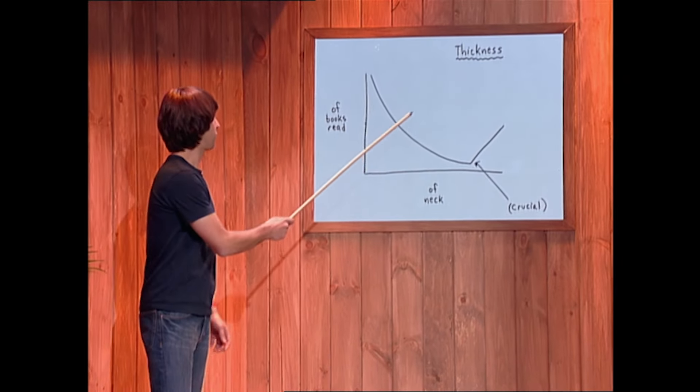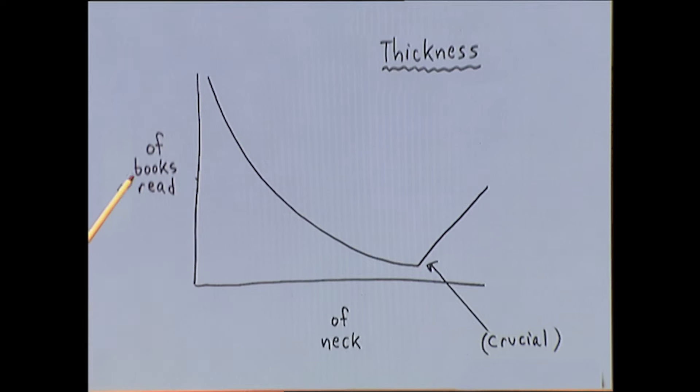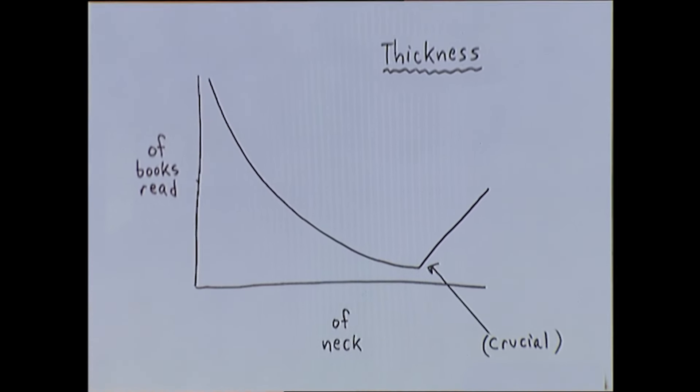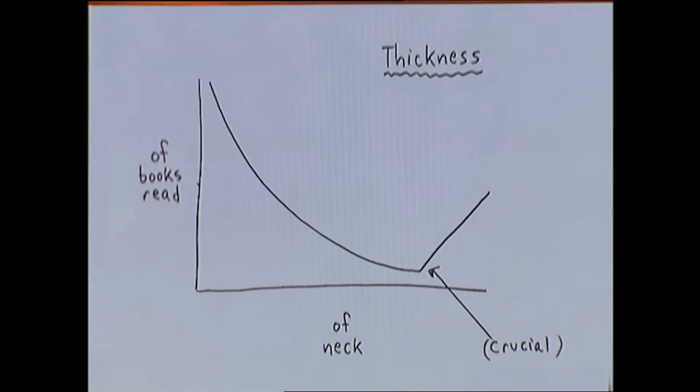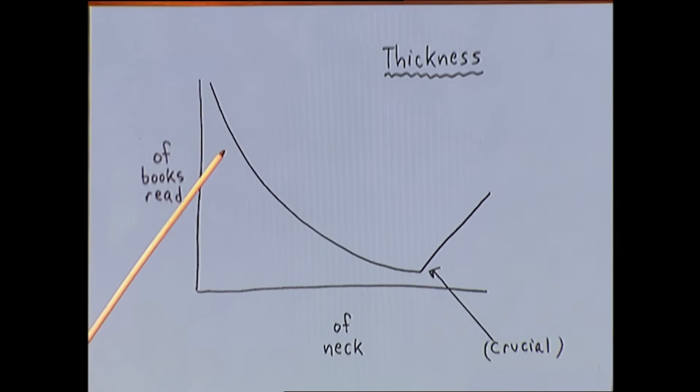Let's take a look at brains in a little more detail. This is a graph. The thickness of a person's neck versus the thickness of the books they've read. You'll see that as the neck gets thicker, the thickness of the books decreases.